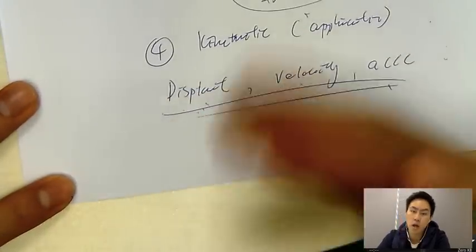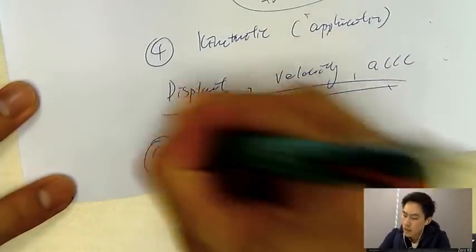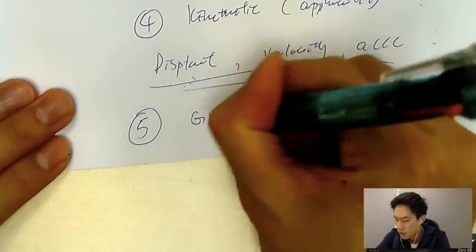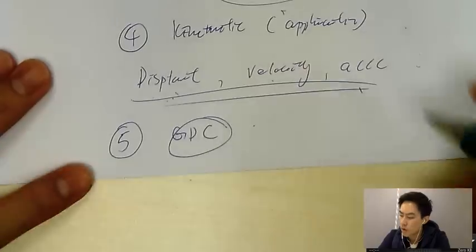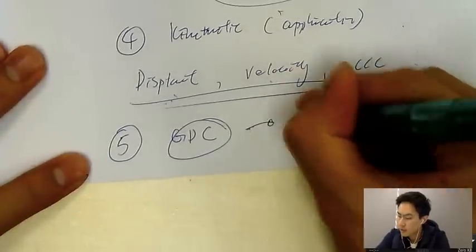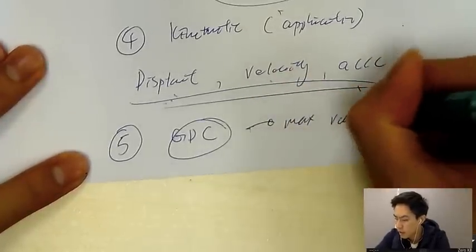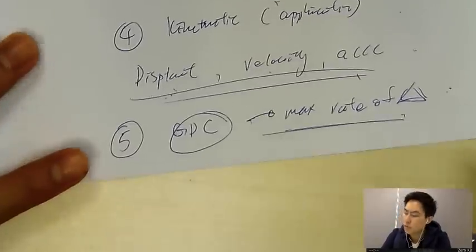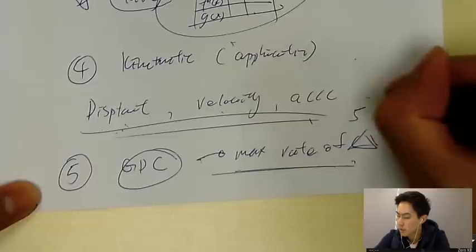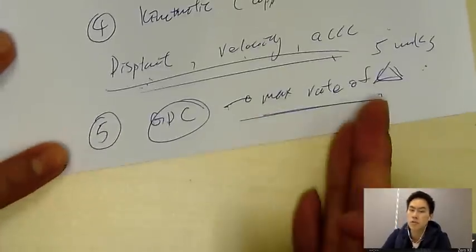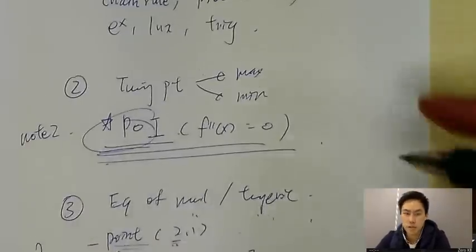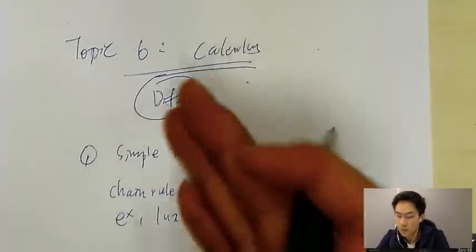And the last one is actually the GDC question. You need to know how to use your GDC, let's say to find the maximum rate of change. This kind of question will be like a five mark question in your IB exam, but if you understand the skills, then it will be very easy. So basically, this is the five things you need to know in your calculus differentiation exam.